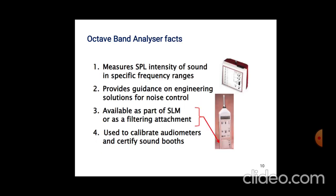The Octave Band Analyzer measures the sound pressure level (SPL) and intensity of sound in specific frequency ranges. It provides guidance on frequency-based solutions for noise control. It is available as part of an SLM or as a filtering attachment, and it is used to calibrate audiometers and certify sound booths. This covers all the basic noise measurement equipment.